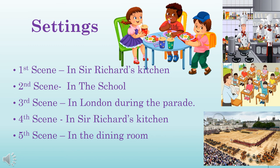There are five scenes, and each scene has a different setting. First scene: Sir Richard's kitchen. Second scene: in the school. Third scene: in London during the procession. Fourth scene: again in Sir Richard's kitchen. Fifth scene: in the dining room.